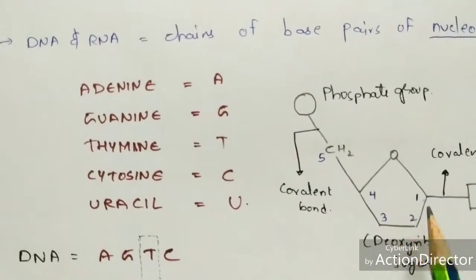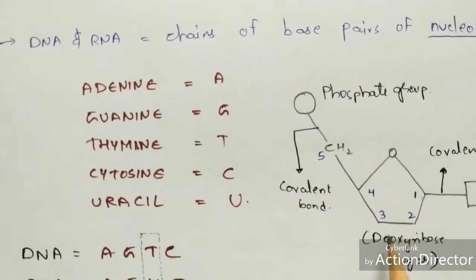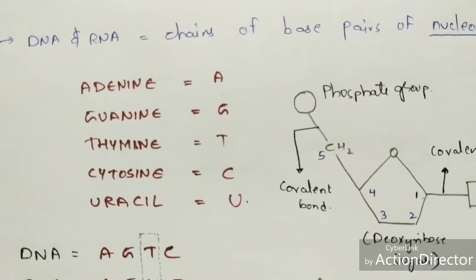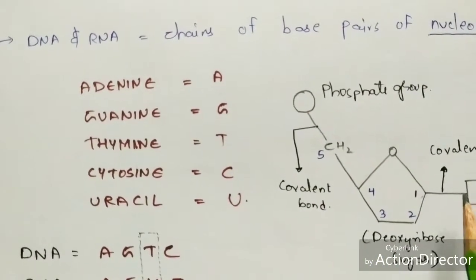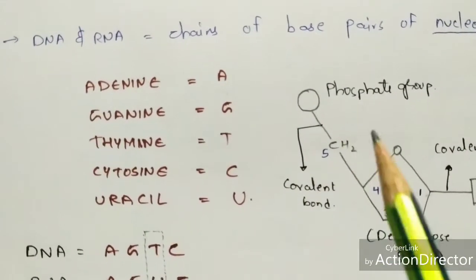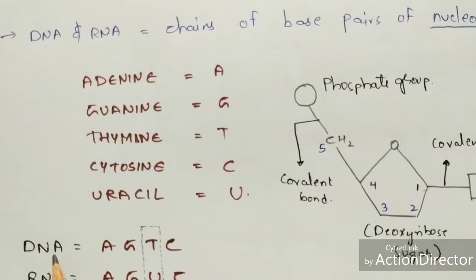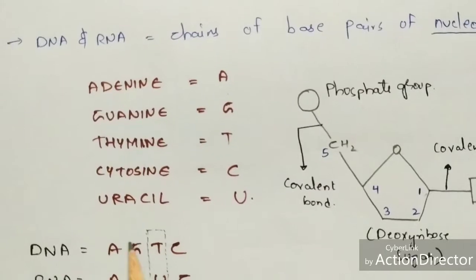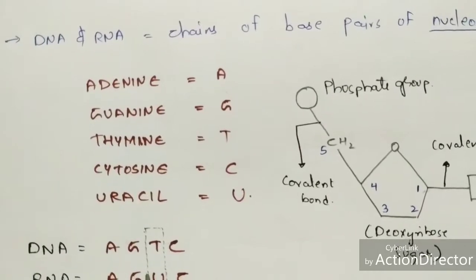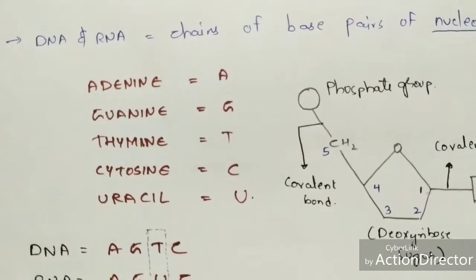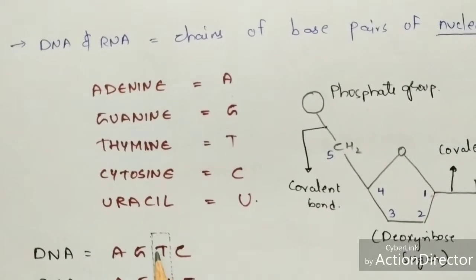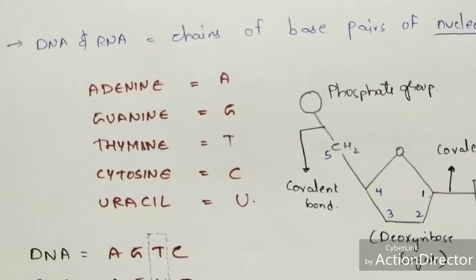Here I will show the structure of the DNA nucleotide. DNA consists of nucleotides A, G, T, C — adenine, guanine, thymine, and cytosine. In RNA, thymine is replaced with uracil. So in RNA, thymine is not present, and in DNA, uracil is not present. This is the key difference to remember.